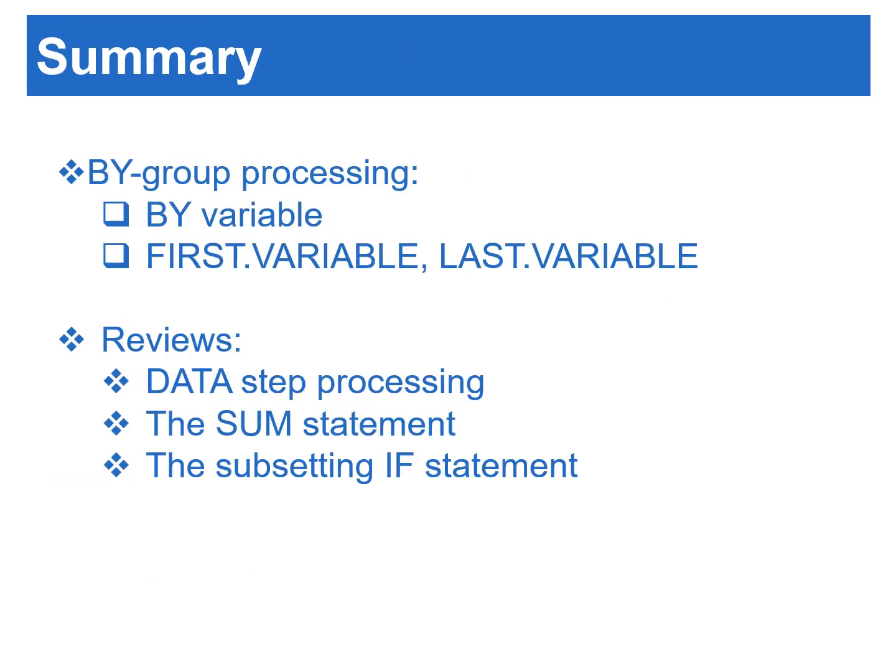Now let's review what we've learned from this video. We learned how to identify the beginning or end of measurement for each subject by using by-group processing in the data step. SAS creates two temporary variables for each by-variable during by-group processing — first.variable and last.variable — which indicate when SAS reads the first or the last observation of each subject. Understanding how by-group processing works is closely related to knowing how the data step processes during the execution phase. We also reviewed the sum and subsetting IF statements. We will see more applications of by-group processing in the next video. I hope you enjoyed this video. Please subscribe to my channel and click the bell icon to get new video updates.